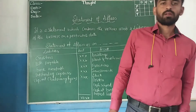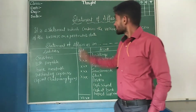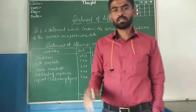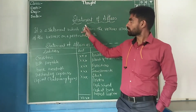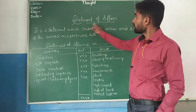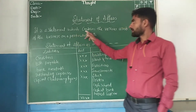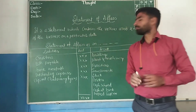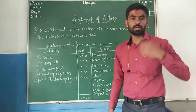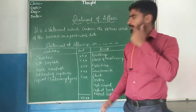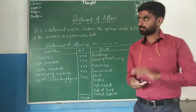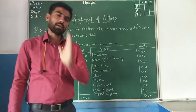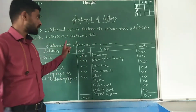Hi students. Today the first step is the Statement of Affairs — converting a single entry system into a double entry system. It is a statement which contains various assets and liabilities of the business on a particular date. It is a permit which is kept in the case of the single entry system.